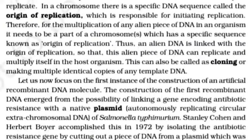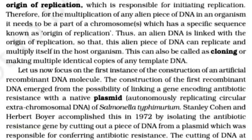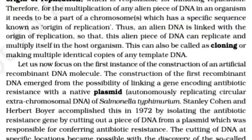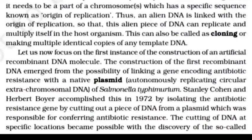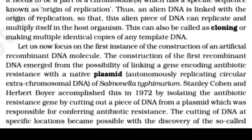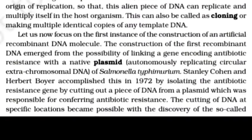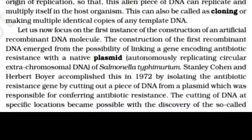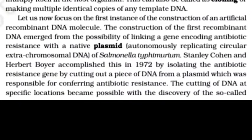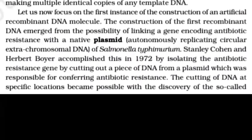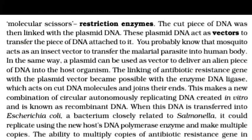The first artificial recombinant DNA molecule was constructed from the possibility of linking a gene encoding antibiotic resistance with a native plasmid — an autonomously replicating circular DNA. Stanley Cohen and Herbert Boyer accomplished this in 1972 by isolating the antibiotic resistance gene by cutting out a piece of DNA from a plasmid which was responsible for conferring antibiotic resistance. The cutting of DNA at a specific location became possible with the discovery of so-called molecular scissors: restriction enzymes.